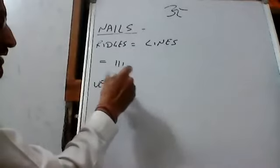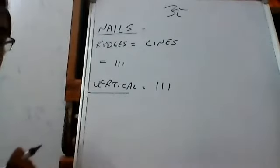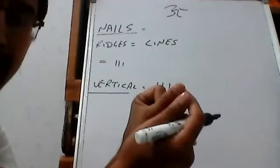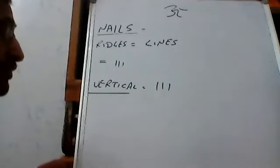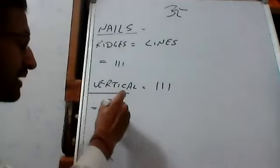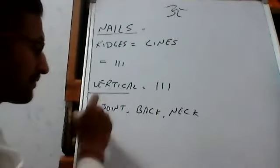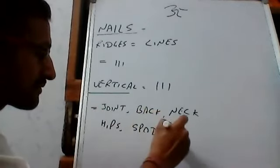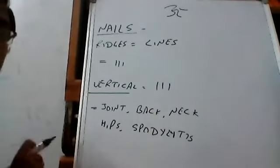If you see the vertical nails, vertical lines, vertical ridges, you feel like this. You touch your nail like this and you feel something. So there are vertical ridges. If you find them, it tells the possibility of getting any kind of joint pain, back pain, neck pain, hips, spondylitis or any kind of pain related problems.